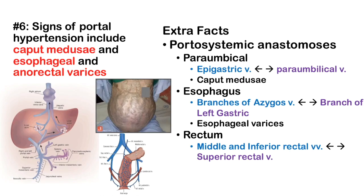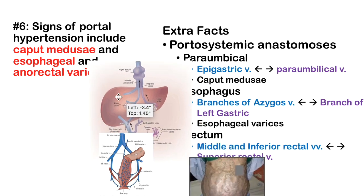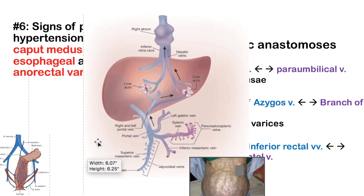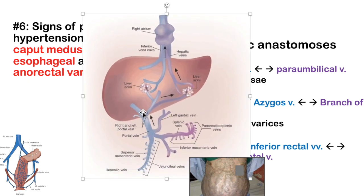Fact 6: Signs of portal hypertension include caput medusae and esophageal and anorectal varices. In portal hypertension there's increased pressure within the portal venous system. The liver is mostly supplied by the portal system — blood comes in via the portal vein, goes through the liver, then forms hepatic veins that leave to the inferior vena cava.